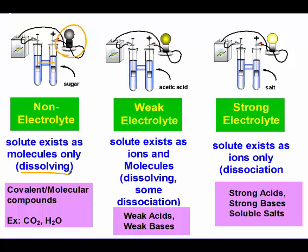Weak electrolytes will dissociate a little bit — some will dissolve and some will break apart or dissociate. Notice the light bulb now glows dimly because some broke apart into ions. Those are going to be your weak acids and weak bases, which only break apart a small amount. Strong electrolytes will dissociate 100% up to a certain point. Those are referred to as strong electrolytes because we have lots of ions, so electricity flows freely. Those are your strong acids, strong bases, and soluble salts.